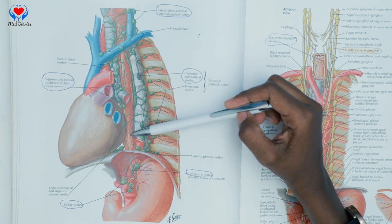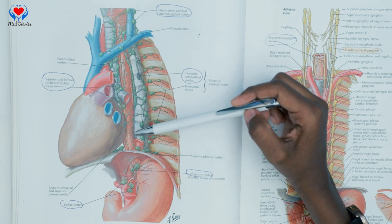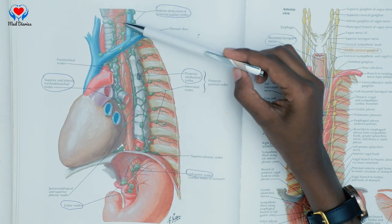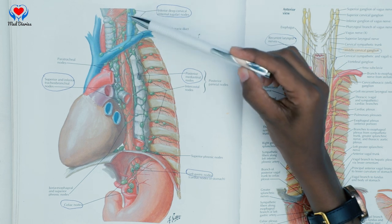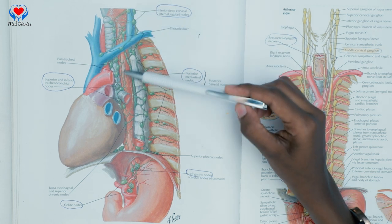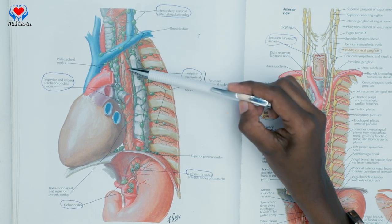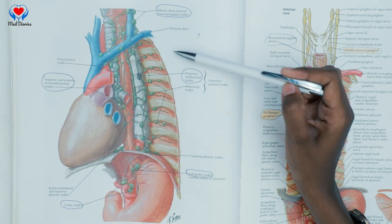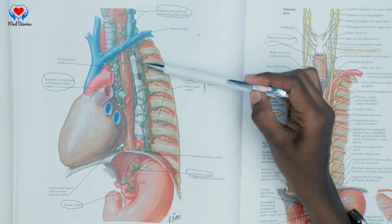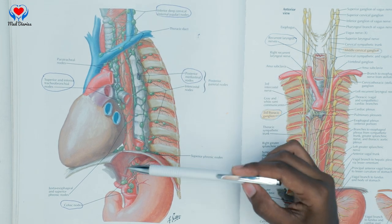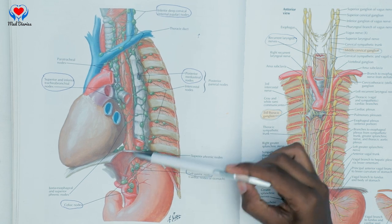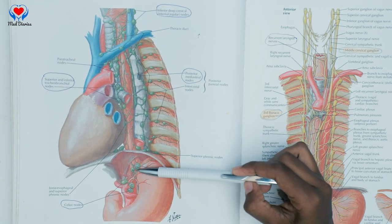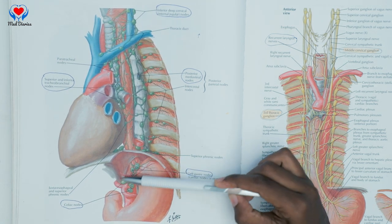Now we move to the lymph drainage of the esophagus. The cervical part drains into the deep cervical nodes. The thoracic part is drained by the tracheobronchial lymph nodes and the posterior mediastinal lymph nodes. The abdominal part is drained by the left gastric nodes and the celiac nodes.